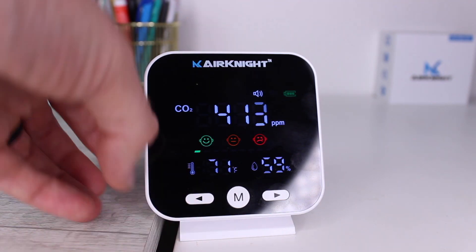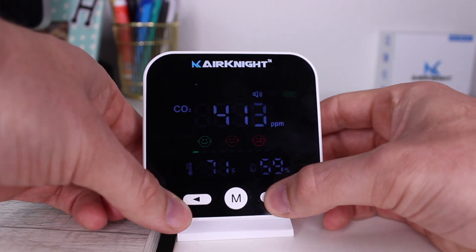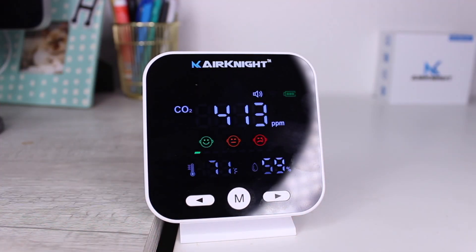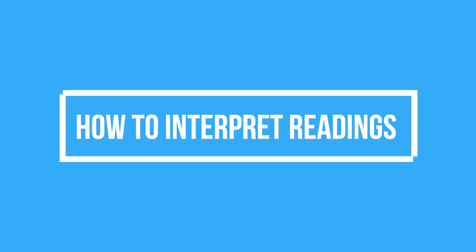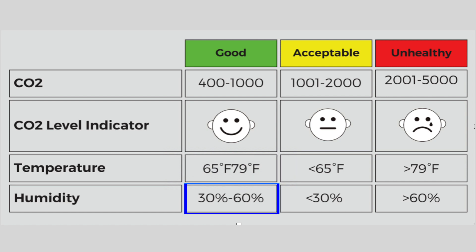If you want to adjust the screen brightness, you can do so by pressing the left button to decrease and the right button to increase. Please reference the table in your user manual. Generally speaking, the targeted ranges are: CO2 less than 1,000 ppm, temperature in the 65 to 79°F range, and humidity in the 30 to 60% range.